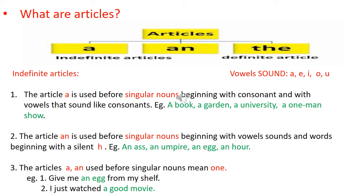Let's see the second point. The article An is used before singular nouns beginning with vowel sounds and words beginning with a silent H. For example: an ass, an umpire, an egg, an hour. Note — it is not 'how-a,' it is 'our,' children. Hope the first and second points are clear.